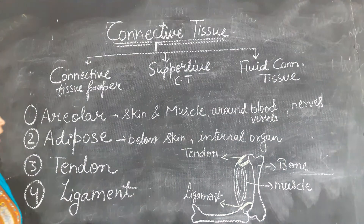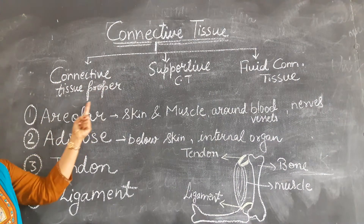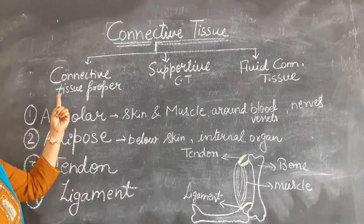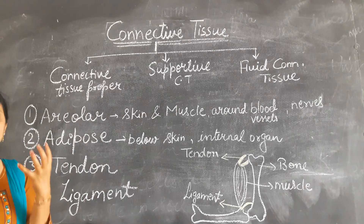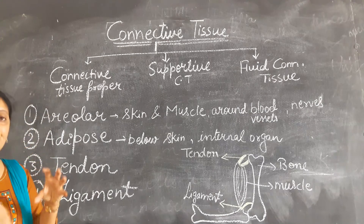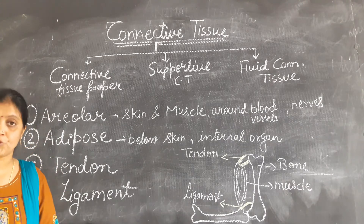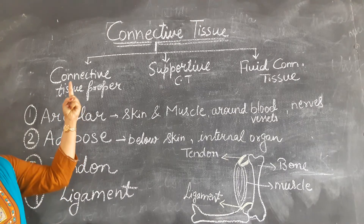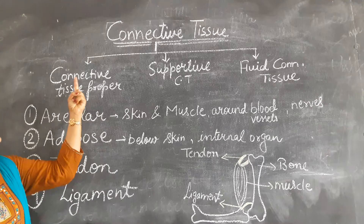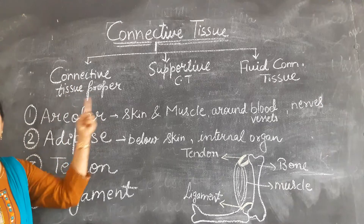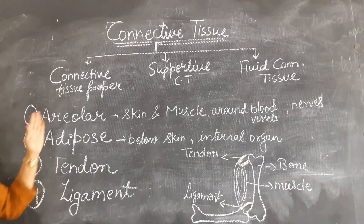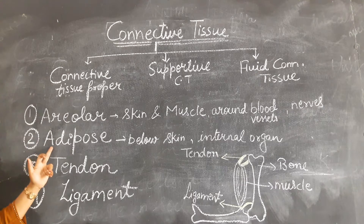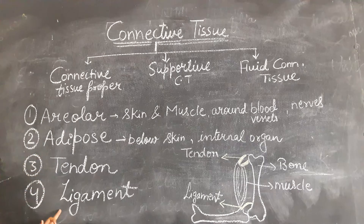Today I am going to explain only connective tissue proper. In connective tissue proper, the matrix connects all the tissue, which is why it is called connective tissue proper. There are four types: areolar, adipose, tendon, and ligament.